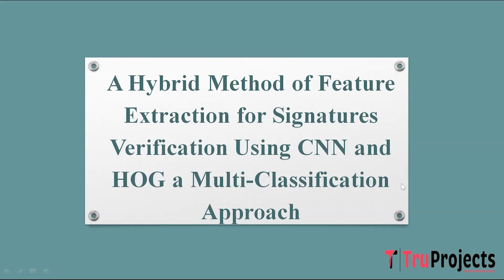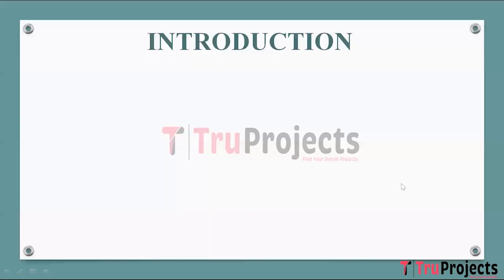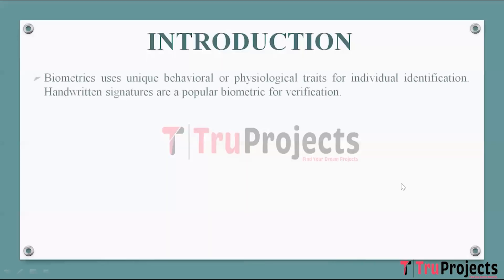Hello, welcome to True Projects. In this video, we are going to explain about the project titled 'A Hybrid Method of Feature Extraction for Signatures Verification using CNN and HOG: A Multi-Classification Approach.' Introduction: Biometrics refer to using unique behavioral or psychological characteristics to identify individuals. Handwritten signatures are widely accepted as a form of biometric verification, where the individual's unique writing style serves as the basis for authentication.